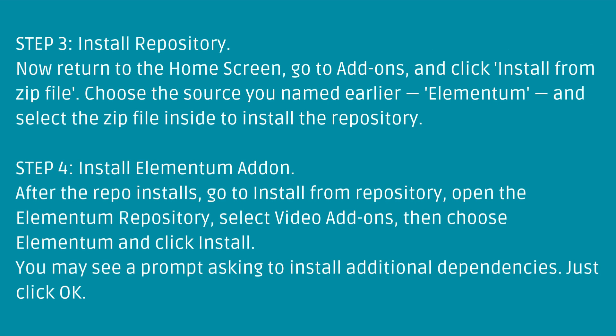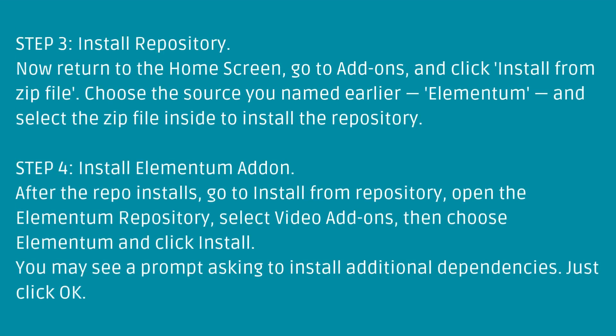Step 4: Install Elementum add-on. After the repo installs, go to Install from repository. Open the Elementum repository, select Video Add-ons, then choose Elementum and click Install. You may see a prompt asking to install additional dependencies — just click OK.